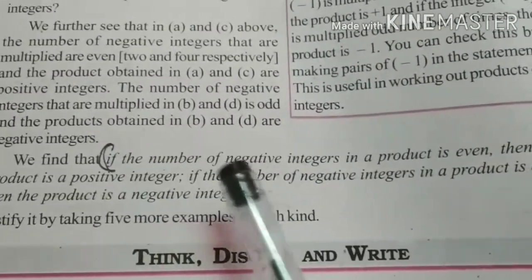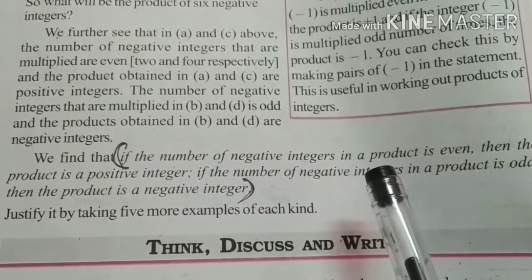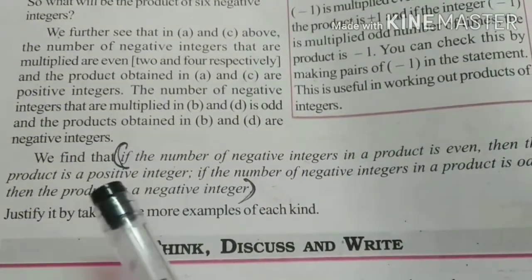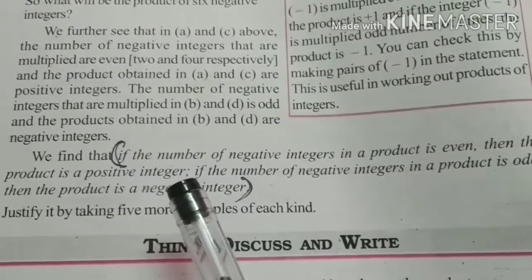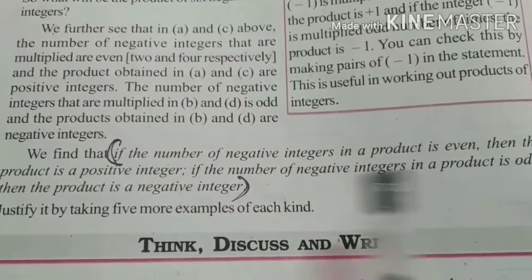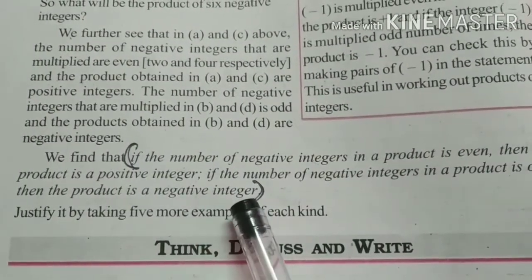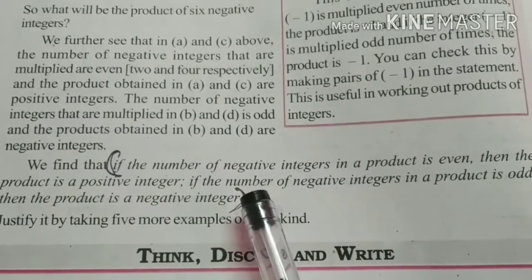If the number of negative integers in a product is even, then the product is a positive integer. If the number of negative integers in a product is odd, then the product is a negative integer. This you can learn.